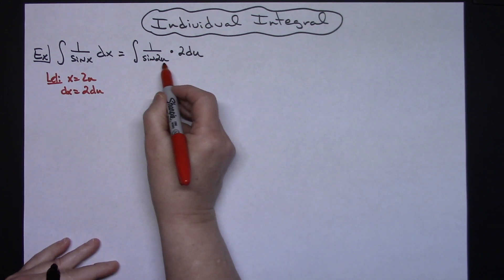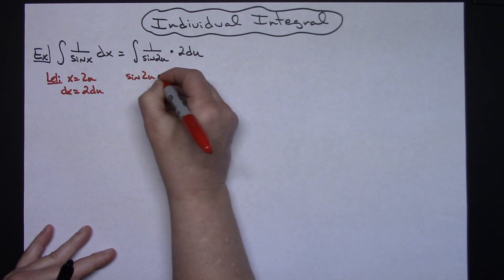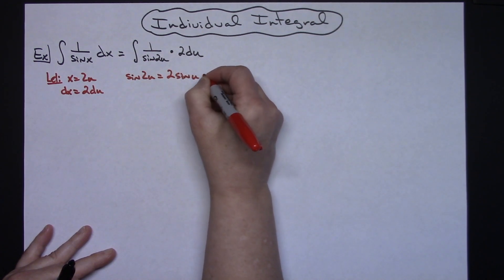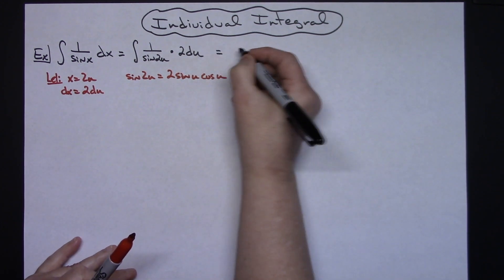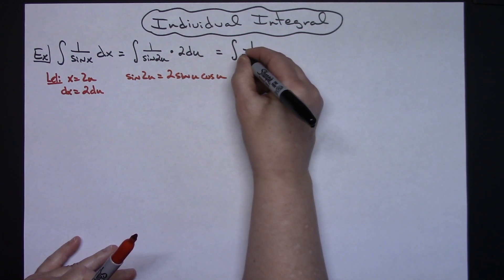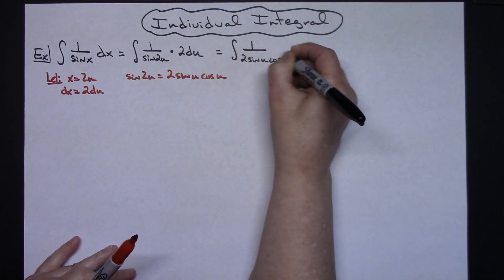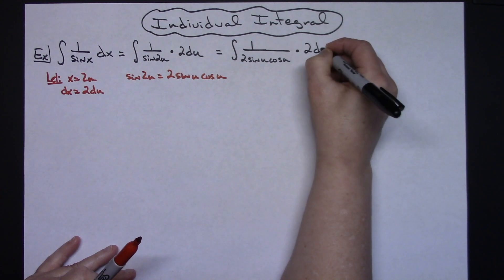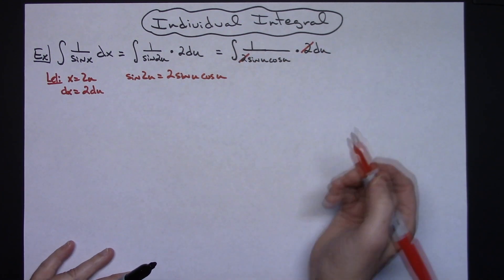Now I've got the sine of 2u, so I want to do the sine of 2u and replace that with the 2 sine u cosine u, so that double angle formula right there. So then we will have the integral of 1 over, replacing that I'll have 2 sine u cosine u, times the 2du. Now at this point I'm going to be able to cross out those 2s.